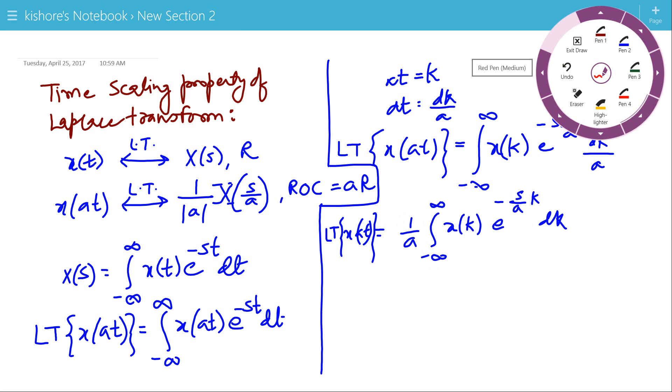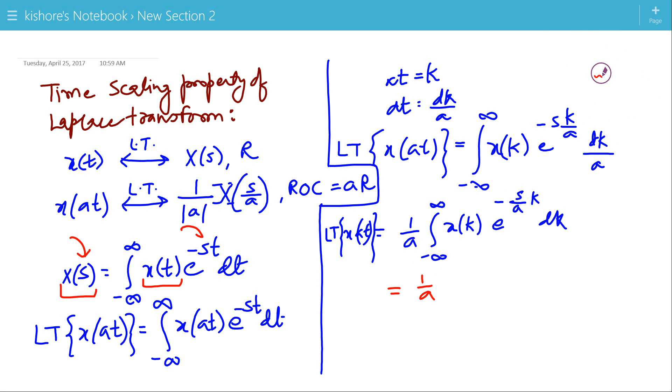So if we compare the two expressions, Laplace Transform of x(at) is 1 by A. In the expression of X of S here we have just S, so this will be 1 by A into X of S by A.